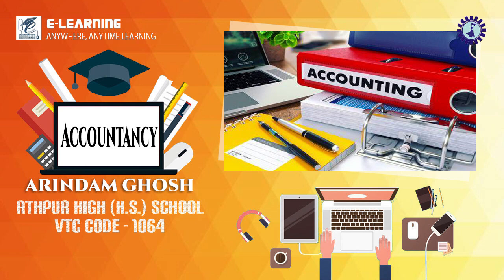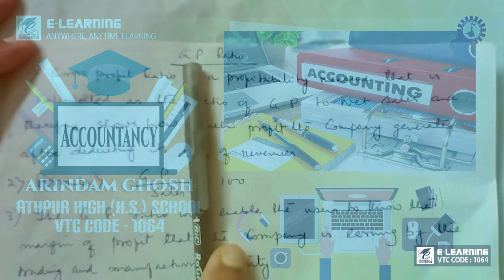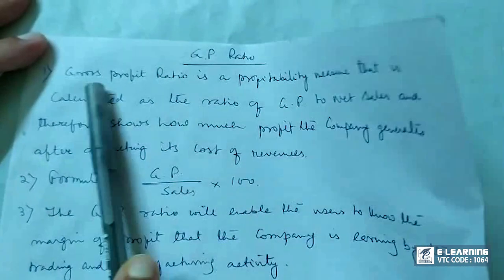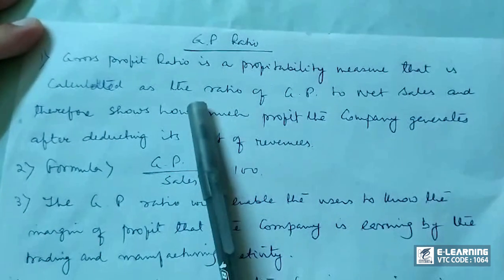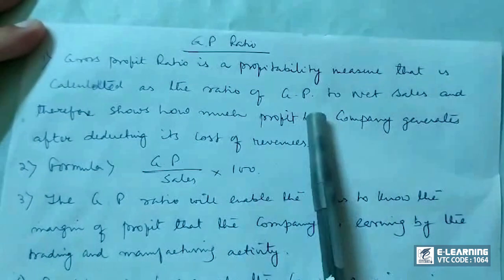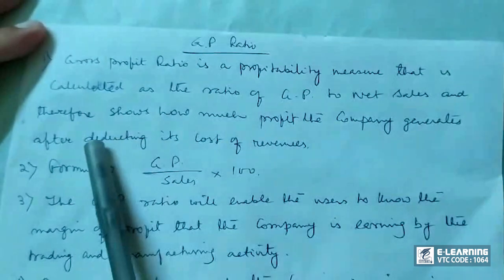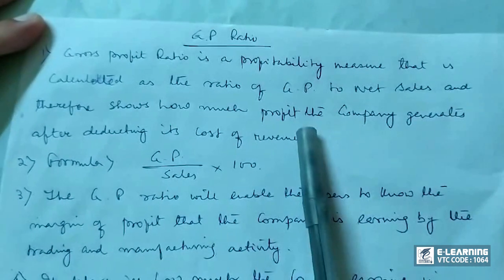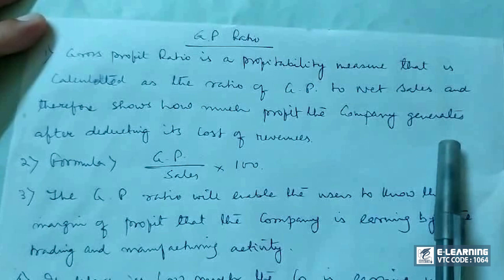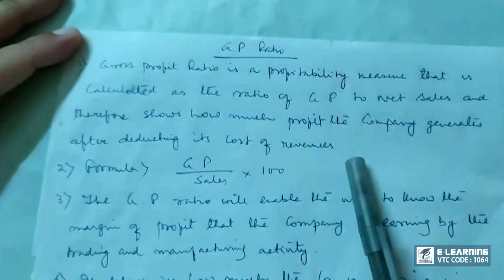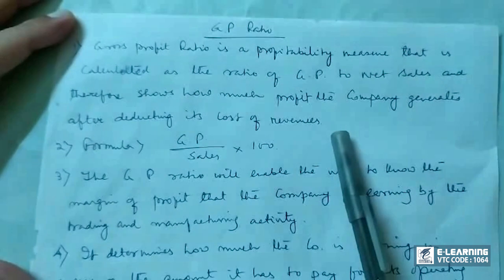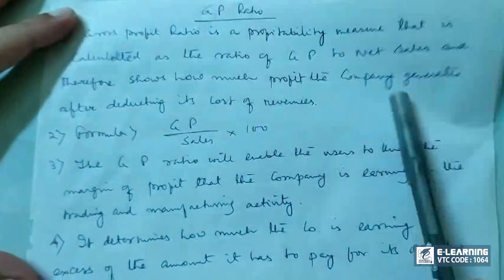Today we are discussing gross profit ratio, popularly called GP ratio. Gross profit ratio is a profitability measure calculated as the ratio of gross profit to net sales, and therefore shows how much profit the company generates after deducting its cost of revenues. The formula for determining gross profit ratio is: